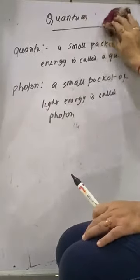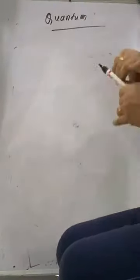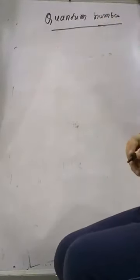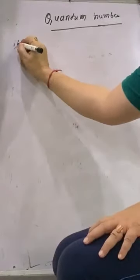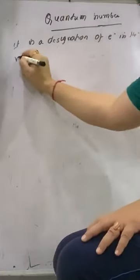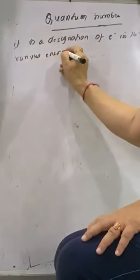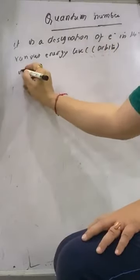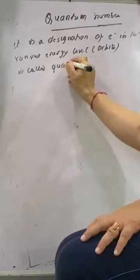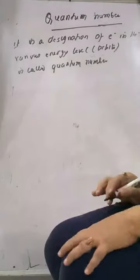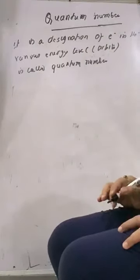Now the most important thing is the quantum number. Quantum number is what? It is a designation of electron in the various energy level. Designation of electron in the various energy level is called quantum number.